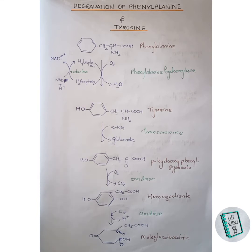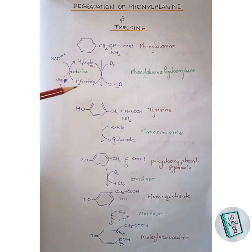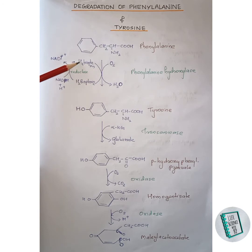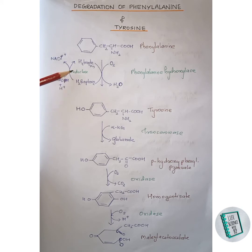The first step is irreversible and requires a specific enzyme called biopterin. The active form of biopterin is tetrahydrobiopterin. In the first step, this tetrahydrobiopterin gets oxidized to dihydrobiopterin, and tetrahydrobiopterin is regenerated by an NADPH-dependent dihydrobiopterin reductase enzyme.